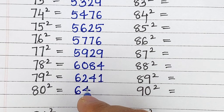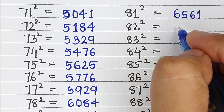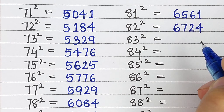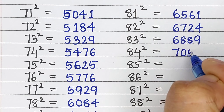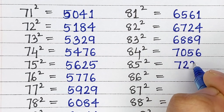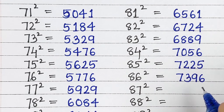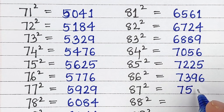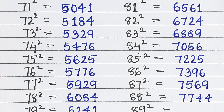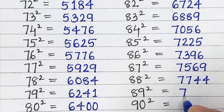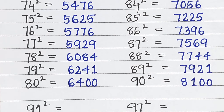Square of 80 is 6400, square of 81 is 6561, square of 82 is 6724, square of 83 is 6889, square of 84 is 7056, square of 85 is 7225, square of 86 is 7396, square of 87 is 7569, square of 88 is 7744, square of 89 is 7921, square of 90 is 8100.